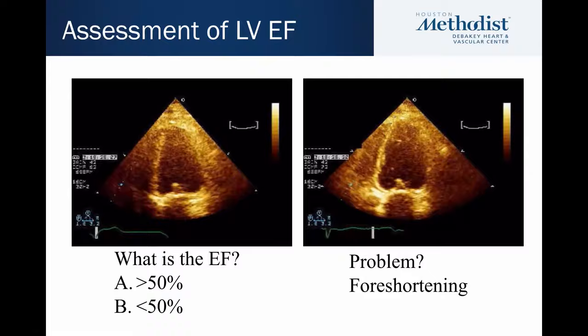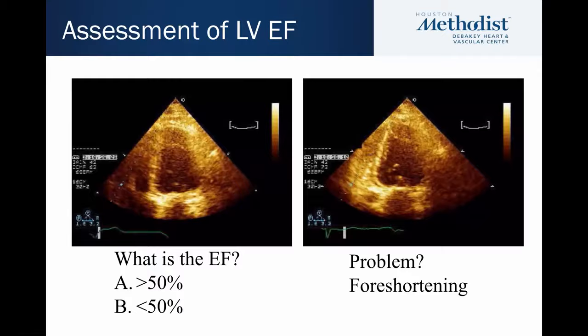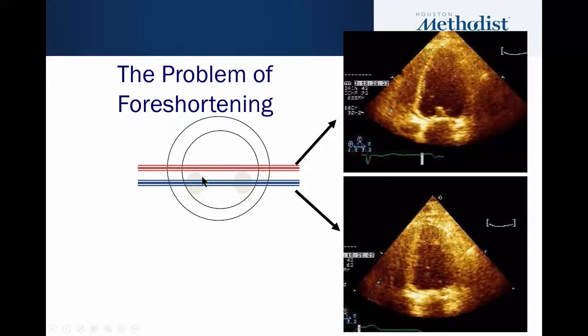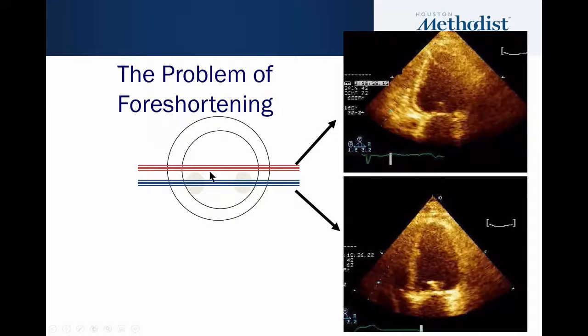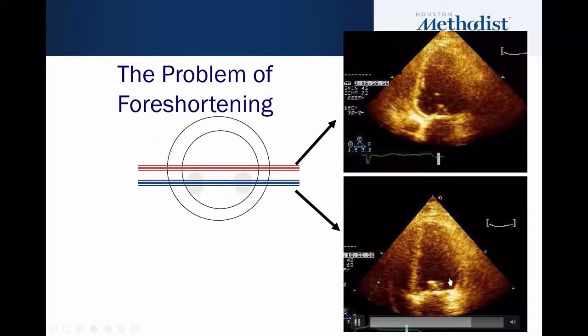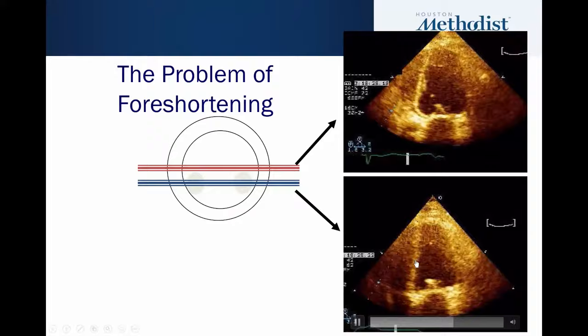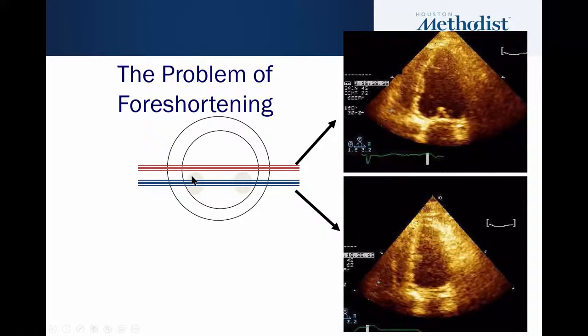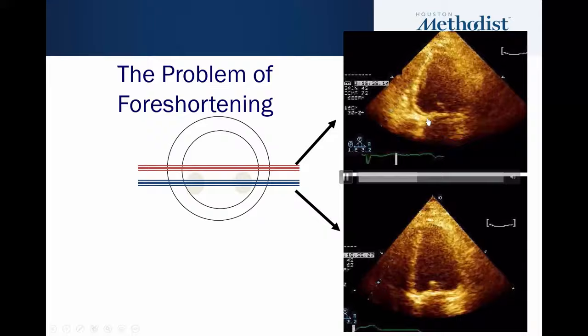Because echo is a tomographic technique, we basically look at slices of the heart. If we're coming from a parasternal or apical position and creating a tomographic cut of the ventricle, we want to cut the chamber right through the center. If we're a little bit to the side, the heart will look smaller and the walls will appear to contract more vigorously with a smaller cavity, giving the impression of a normal ejection fraction. When the plane is more at the center, the cavity is bigger and we see the real depression of function.